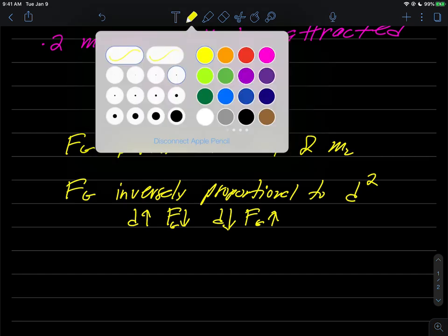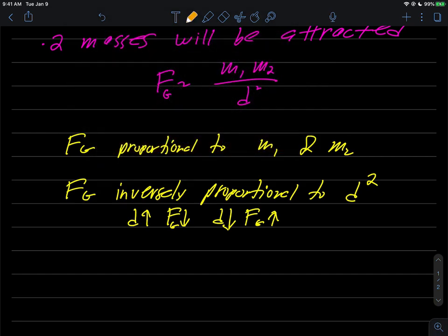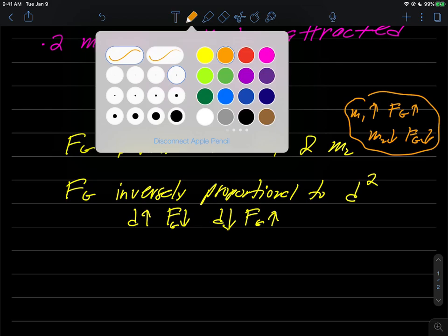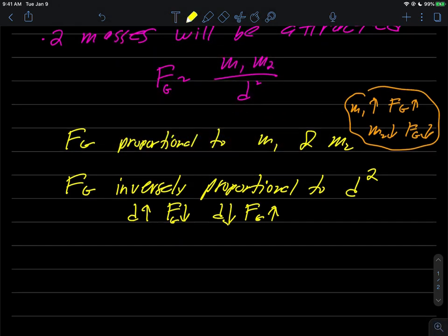Whereas in the case over here that we just did with the proportional, we would say something like if m₁ went up, then Fg would go up in kind. Likewise if m₂ went down, Fg would go down too, and any other combination of these you can find in there will also work. Okay, so that's sort of what we're doing.